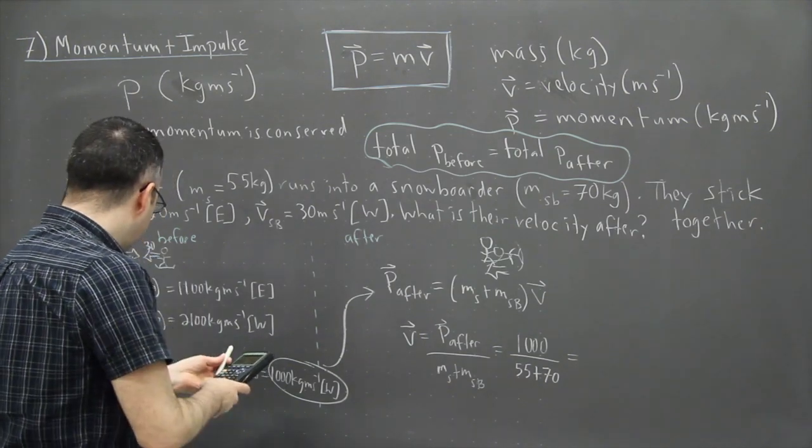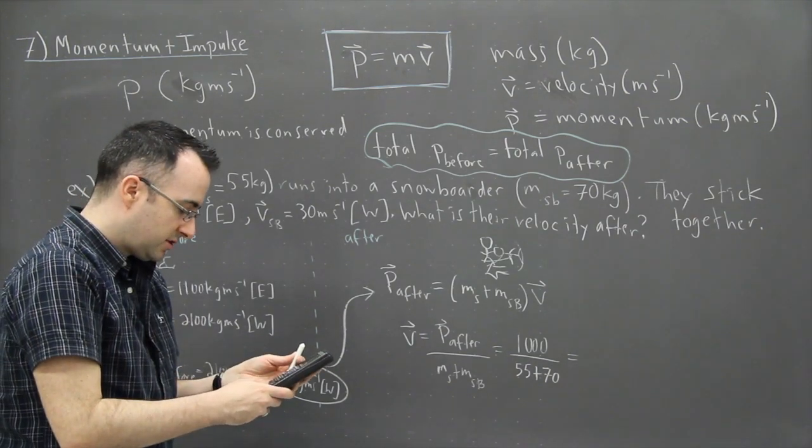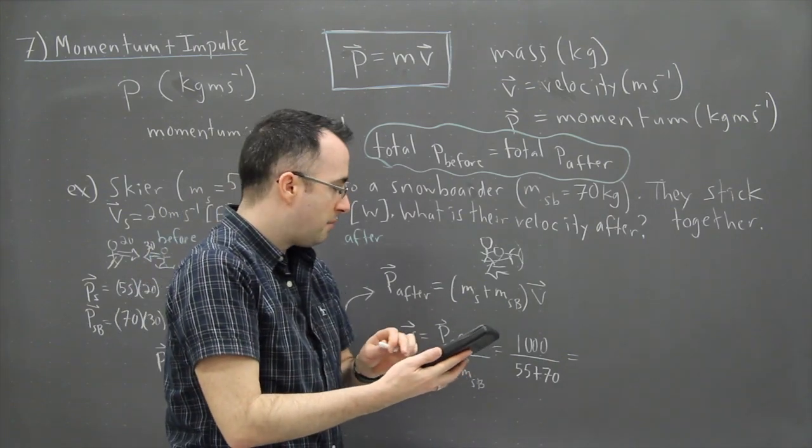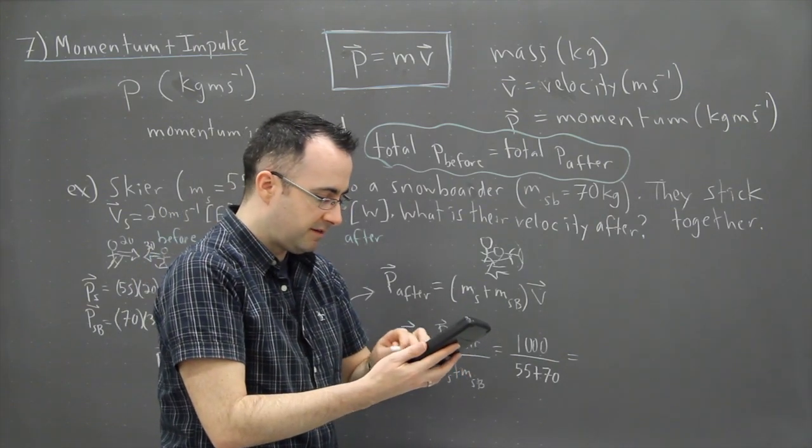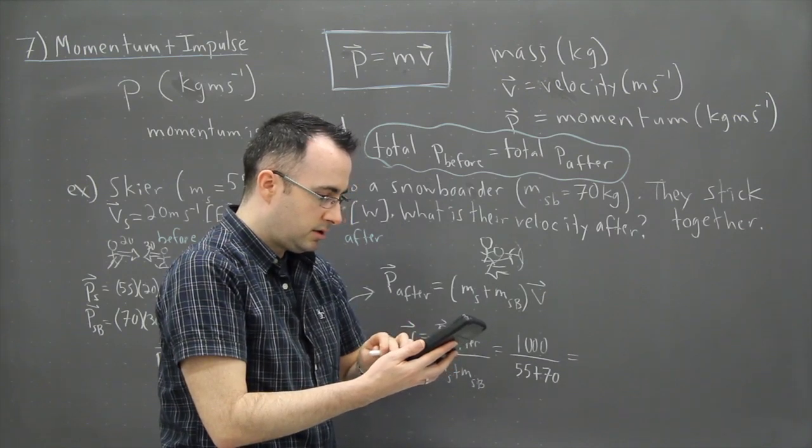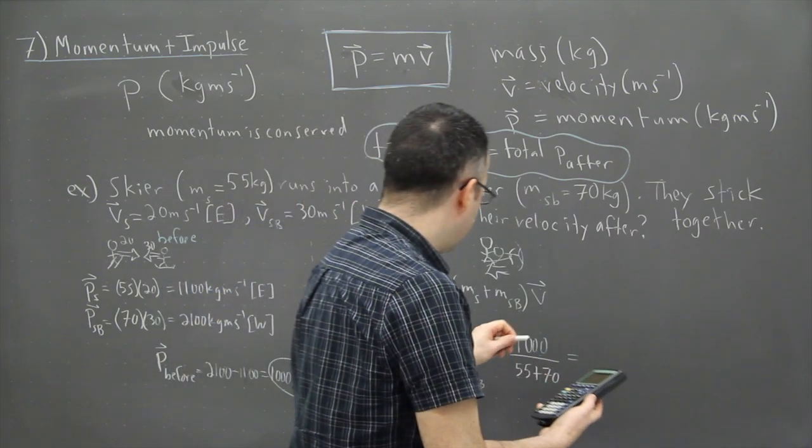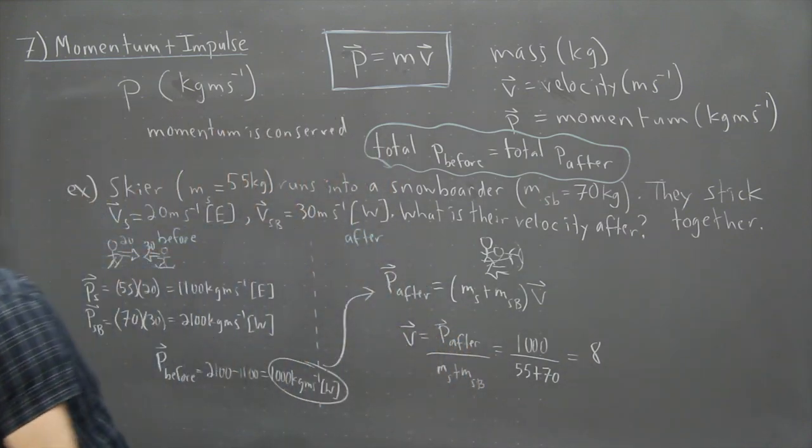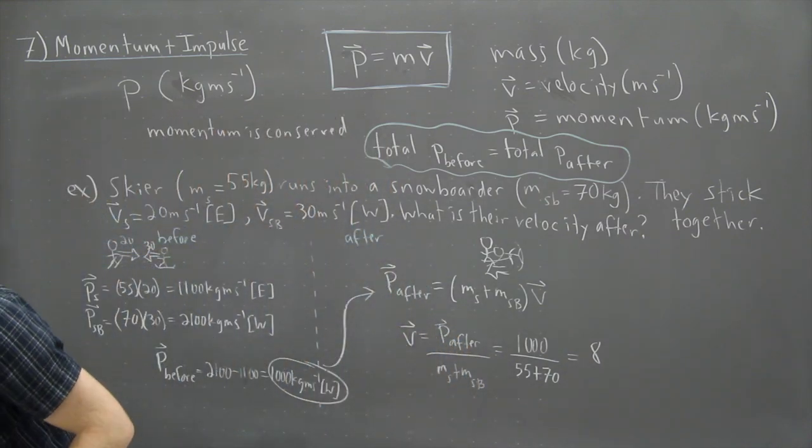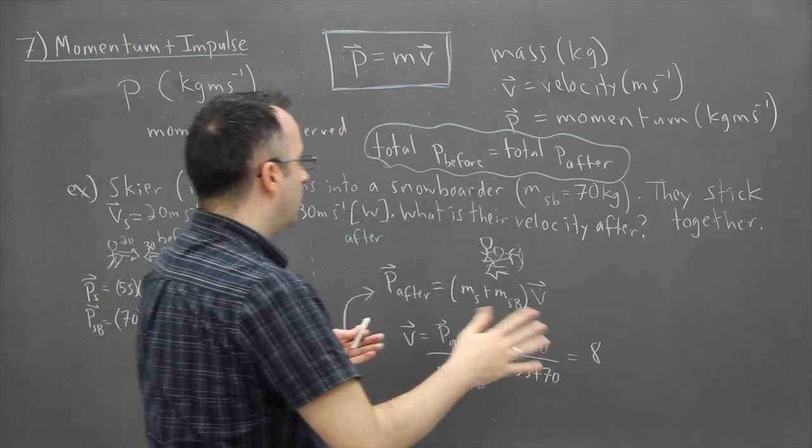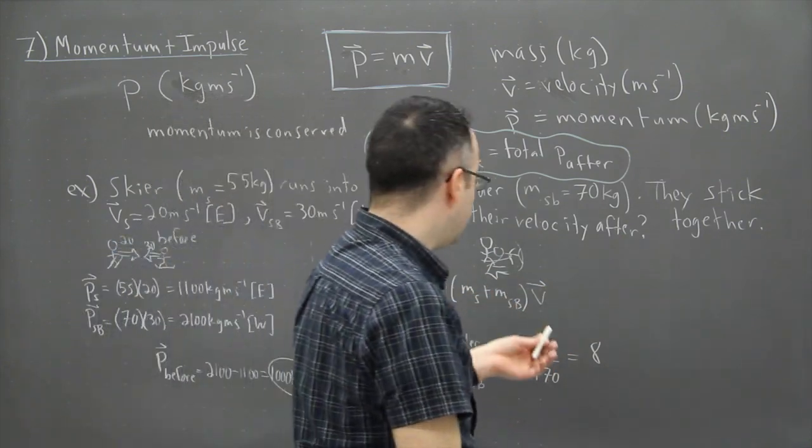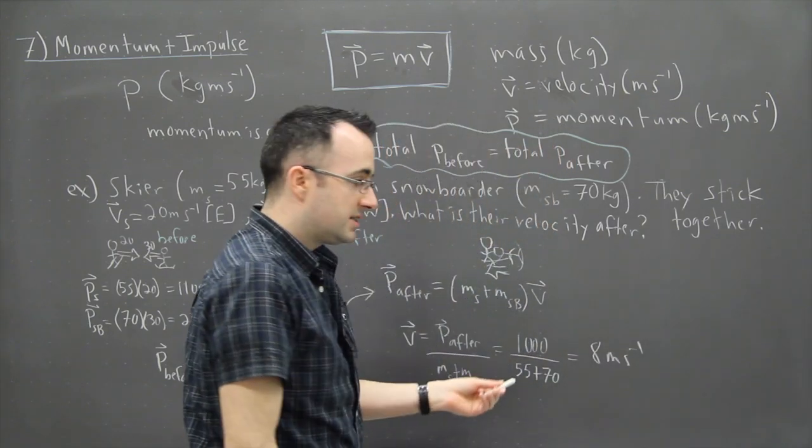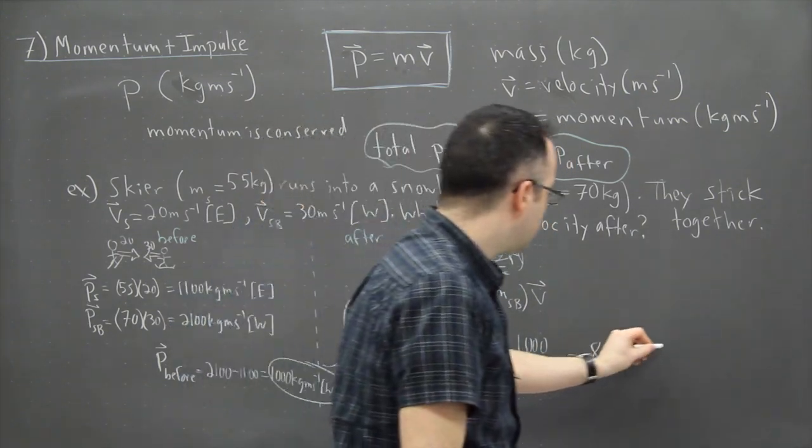Well I'm going to need my calculator for that. And so what I'm going to do right now is just divide a thousand by 55 plus 70. And if I do that, I end up with 8. So what this means then, I'm just going to put down my calculator, is that they're going to move off with a speed of roughly 8 meters per second. Now this is going to have a direction, the direction is going to be west.